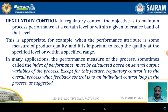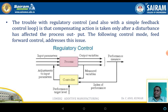In many applications, the performance measure of the process is sometimes called the index of performance. Most are calculated based on several output variables and process parameters. Regulatory control is to the overall process what feedback control is to an individual control loop. The trouble with the regulatory control system is that compensating action is taken only after the disturbance has affected the process output.